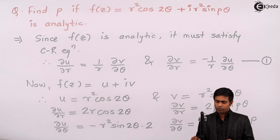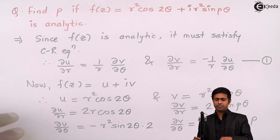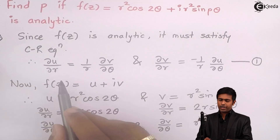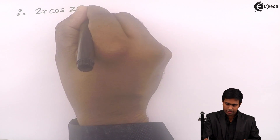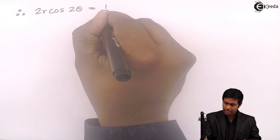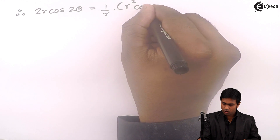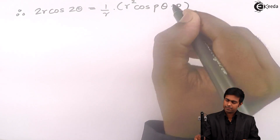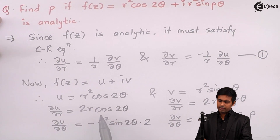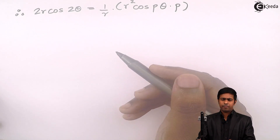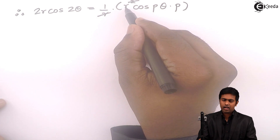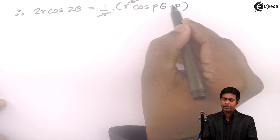Now let us substitute these four terms into equation number 1. We get ∂u/∂r, that is 2r cos 2 theta, equals (1/r)(∂v/∂θ), that is (1/r) times r square cos p theta times p. So 2r cos 2 theta equals (1/r) times r square p cos p theta. By cancelling r, we get r p cos p theta.